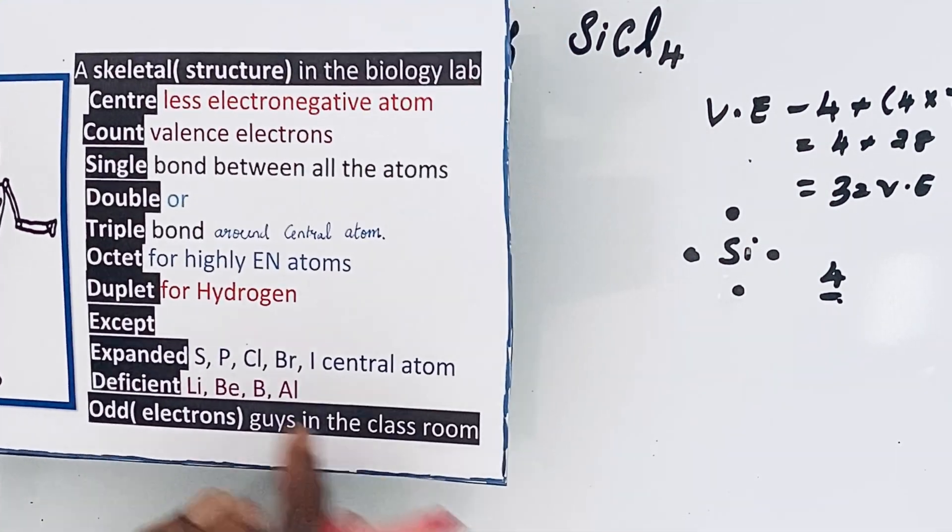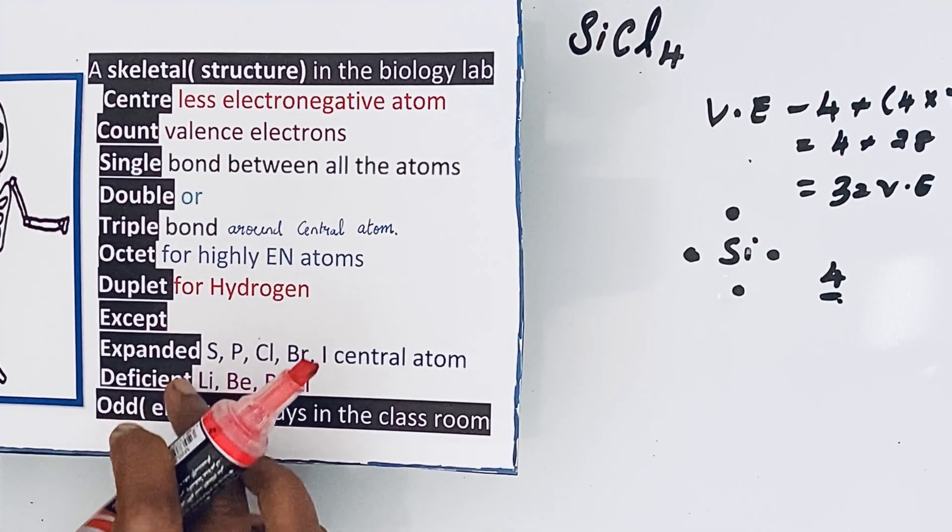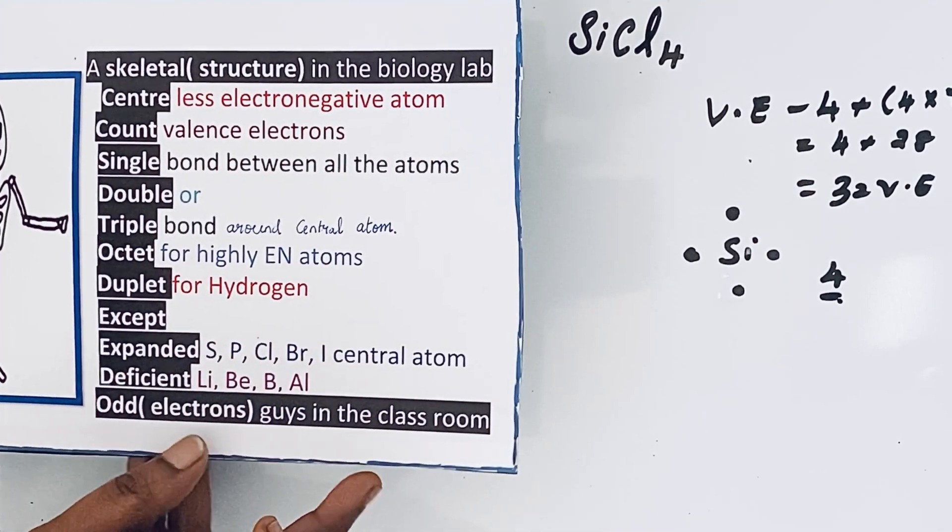Duplet for hydrogen. Anyhow, we don't have hydrogen atom here, except expanded, deficient, odd electrons. But that silicon is not coming under this exceptional case.